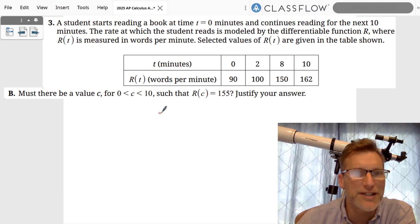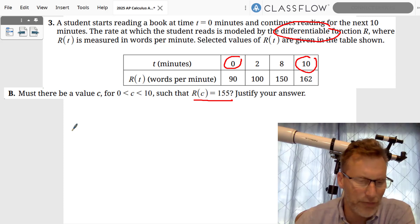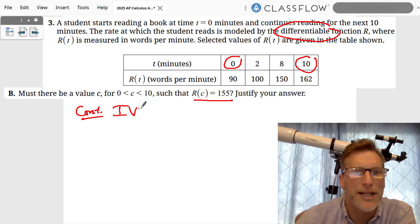Part B says, must there be a value c between 0 and 10 at which r of c is equal to 155? Well, there is a key word here, which is differentiable. Since it's differentiable, it is continuous. If the function is continuous, then the Intermediate Value Theorem applies.